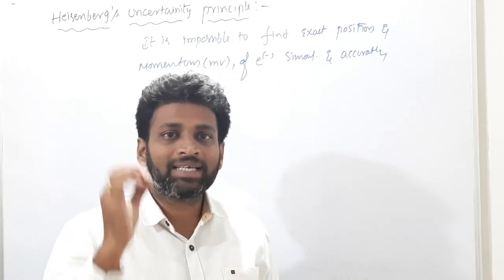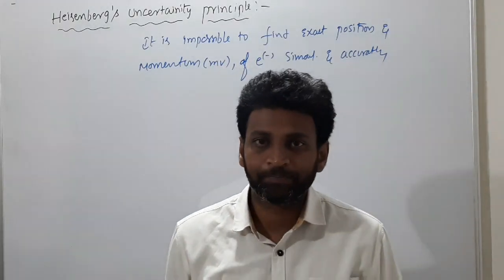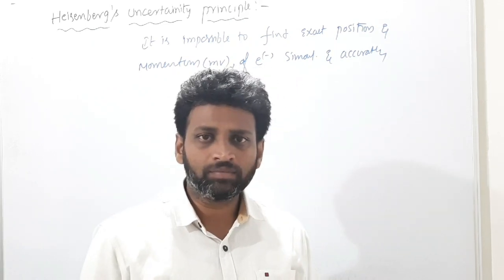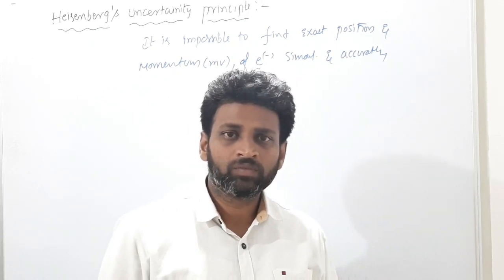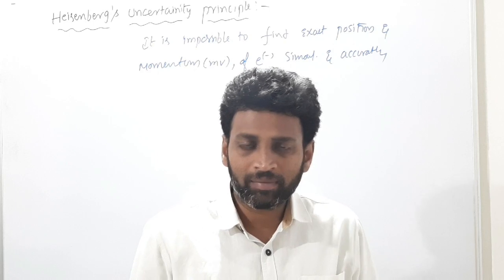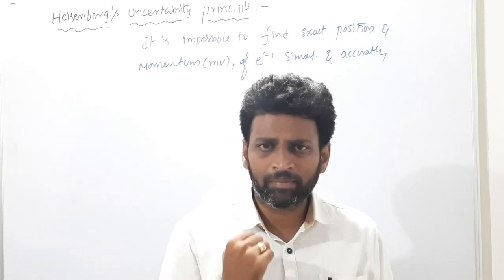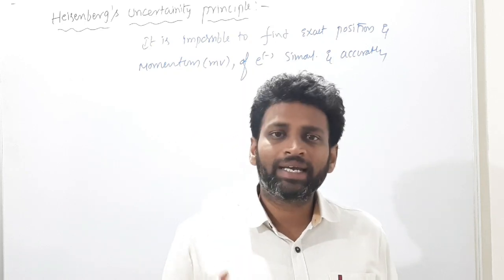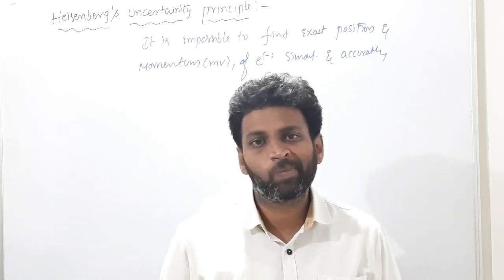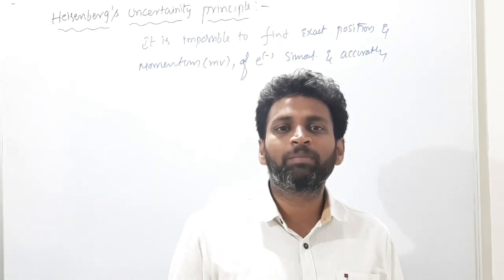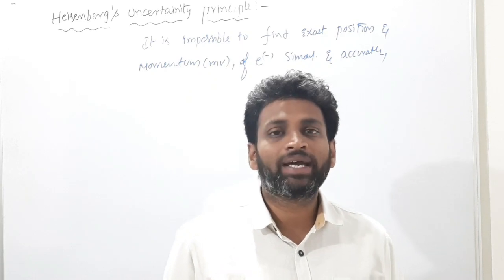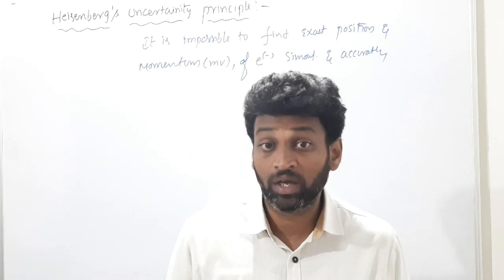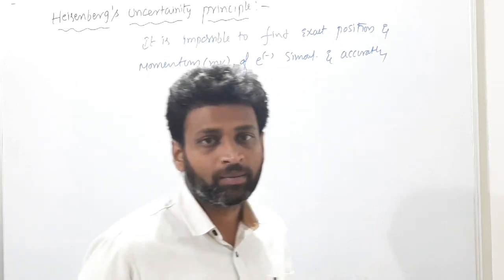We cannot say exactly where the electron is, but we can say the uncertainty. For example, if I am running in one direction with the same speed, you can say my speed and my position. But if I am changing my path, you cannot say both simultaneously and accurately — both meaning position as well as momentum.